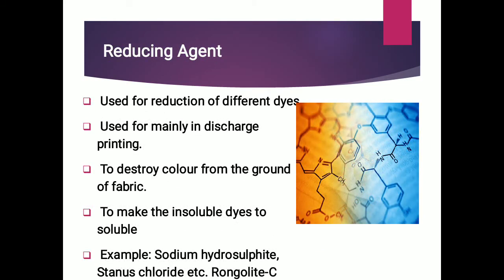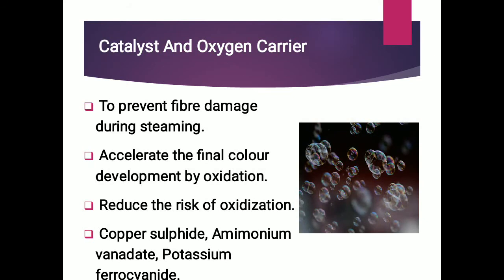Some reducing agents may be used for the reduction of different dyes. It is used mainly in the discharge printing method, where it destroys the color from the ground of the fabric. We will discuss it further in our lecture on Methods of Printing. Examples include sodium hydrosulphite and rongalite. Catalysts and oxygen carriers are used to prevent fiber damage during steaming and to accelerate the final color development by oxidation; it reduces the risk of over-oxidation. Examples include copper sulfate and ammonium compounds.